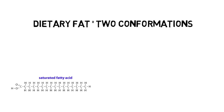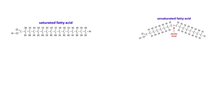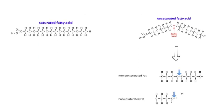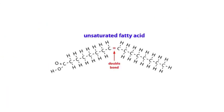Dietary fats come in two conformations: saturated or unsaturated. Unsaturated fats have the possibility of being polyunsaturated, with multiple double bonds, or monounsaturated, having only one double bond. The more unsaturated the fat, traditionally, the more fluid the fat is at room temperature.